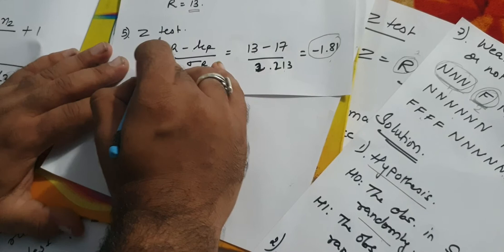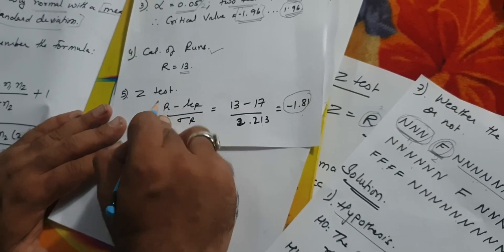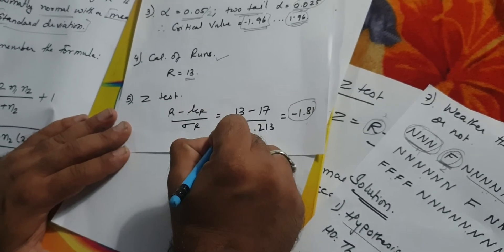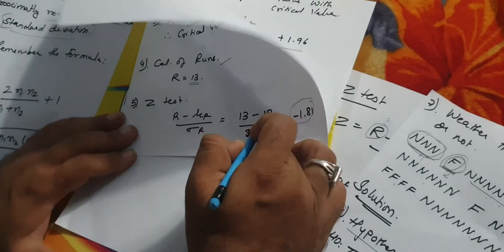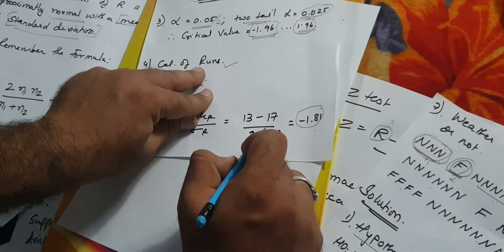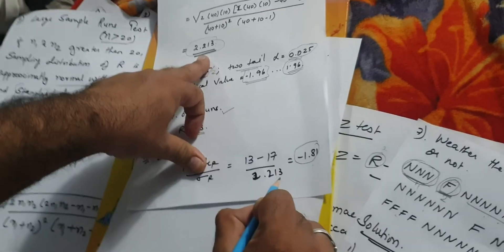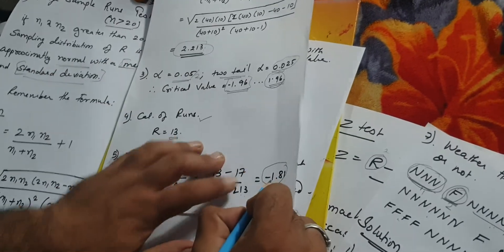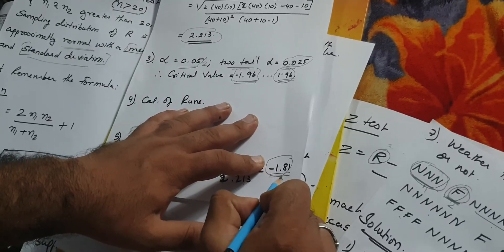The most important step is to apply Z test. Run was 13, mean was 17, divided by standard deviation 2.213. The answer is negative 1.81.